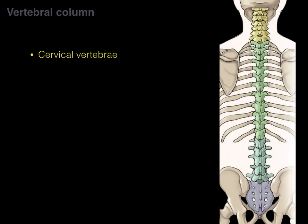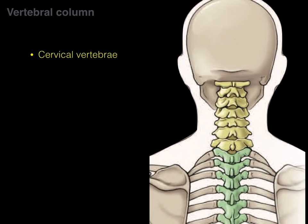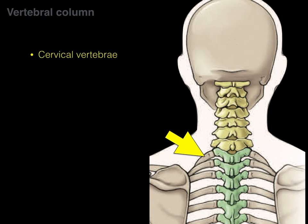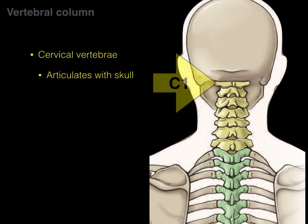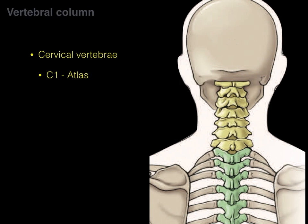Now let's go through each of these vertebrae individually. The cervical vertebrae are located between the skull and the first rib, and there are seven in total. The cervical vertebrae articulate with the skull at the top with the C1 vertebra, and C1 is also called the atlas.